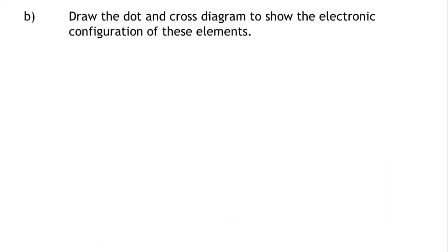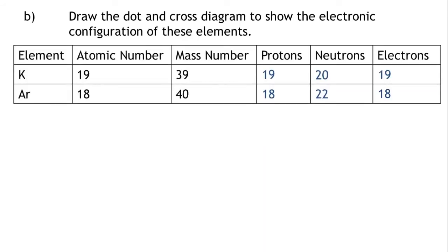Part B: Draw the dot and cross diagram to show the electronic configuration of these elements. So what do we know? The first shell in an atom can hold a maximum of 2 electrons, and the next shells can hold a maximum of 8 electrons.